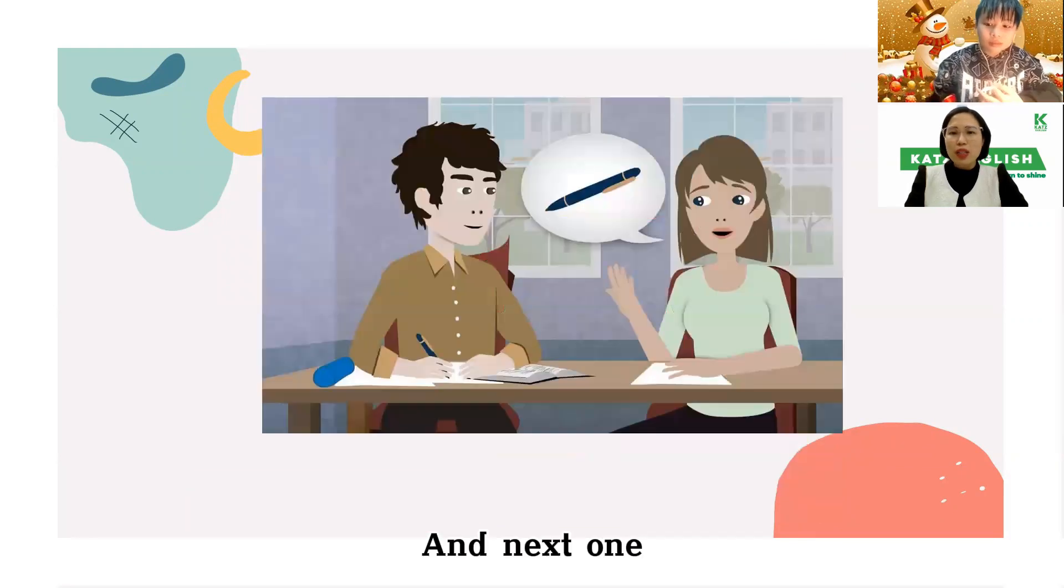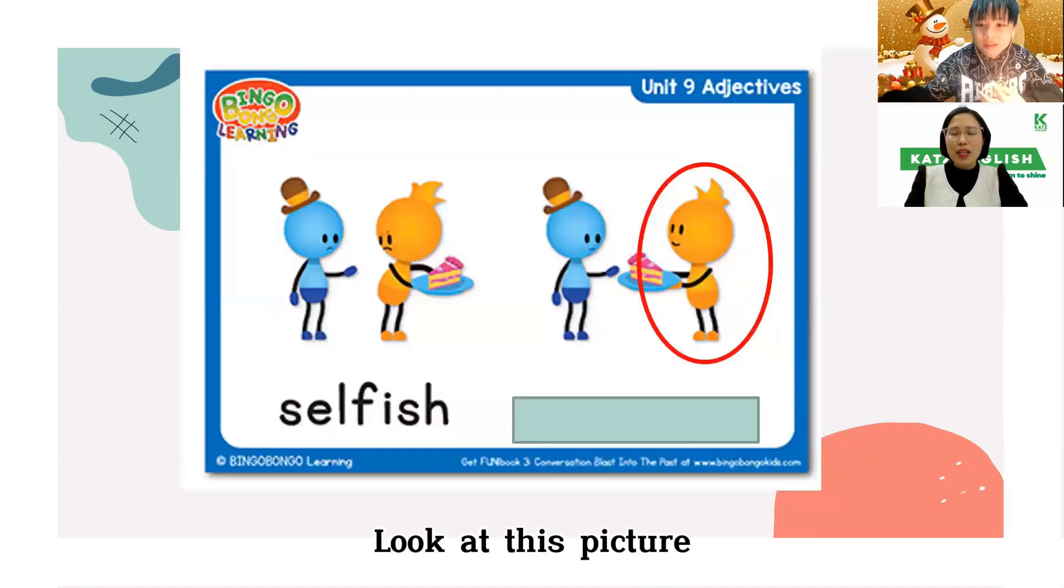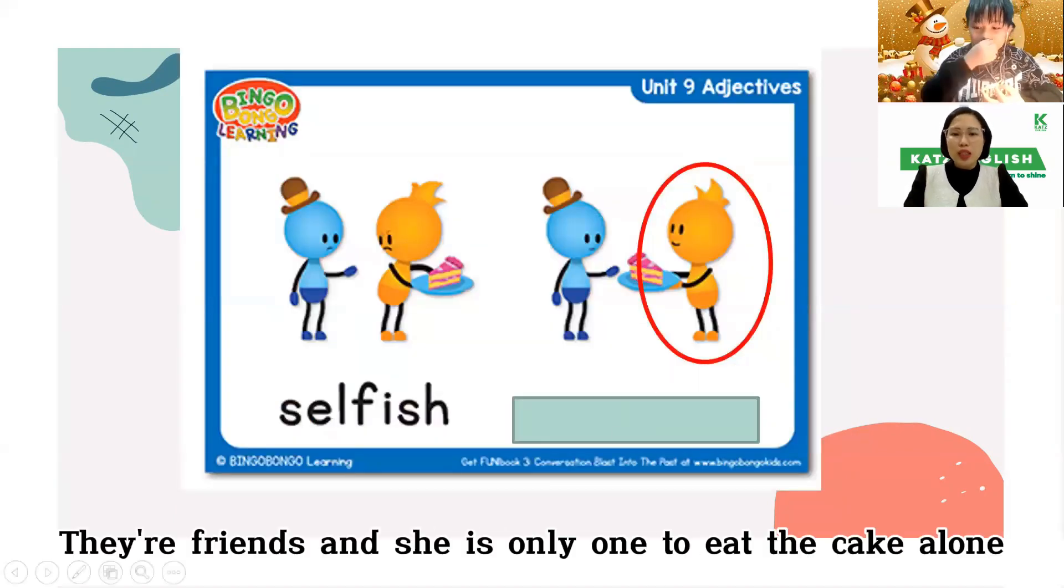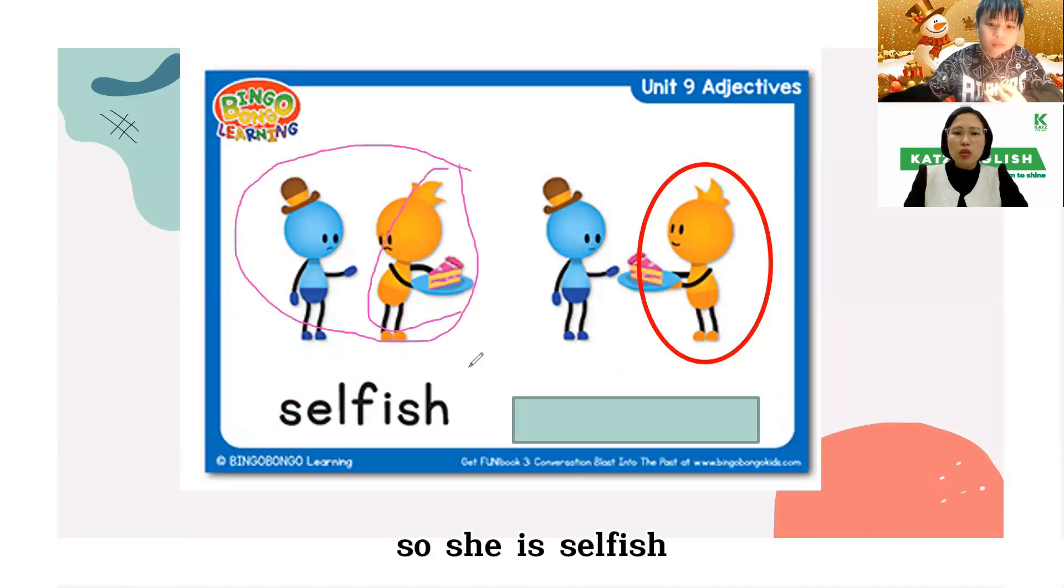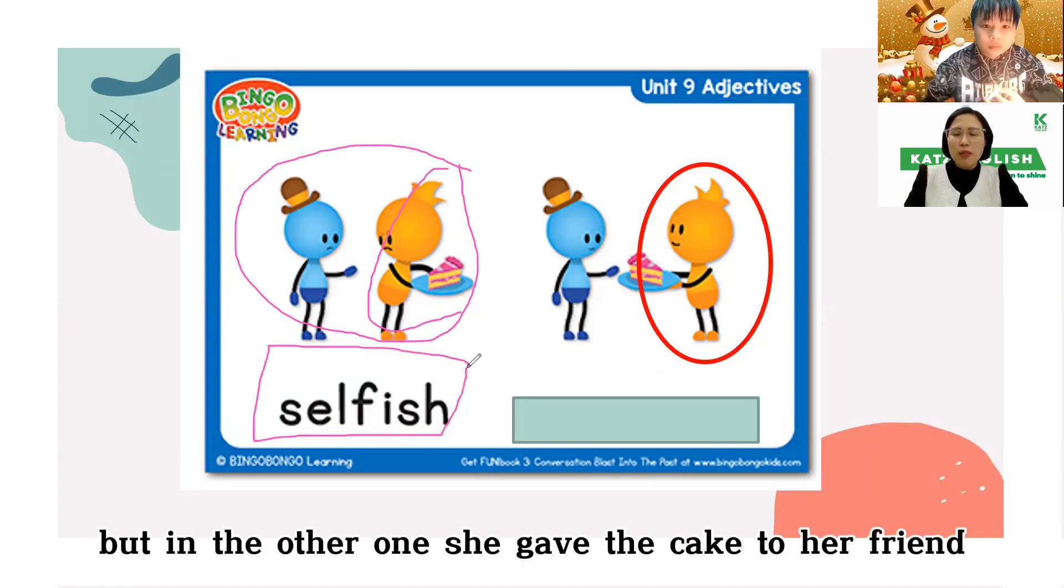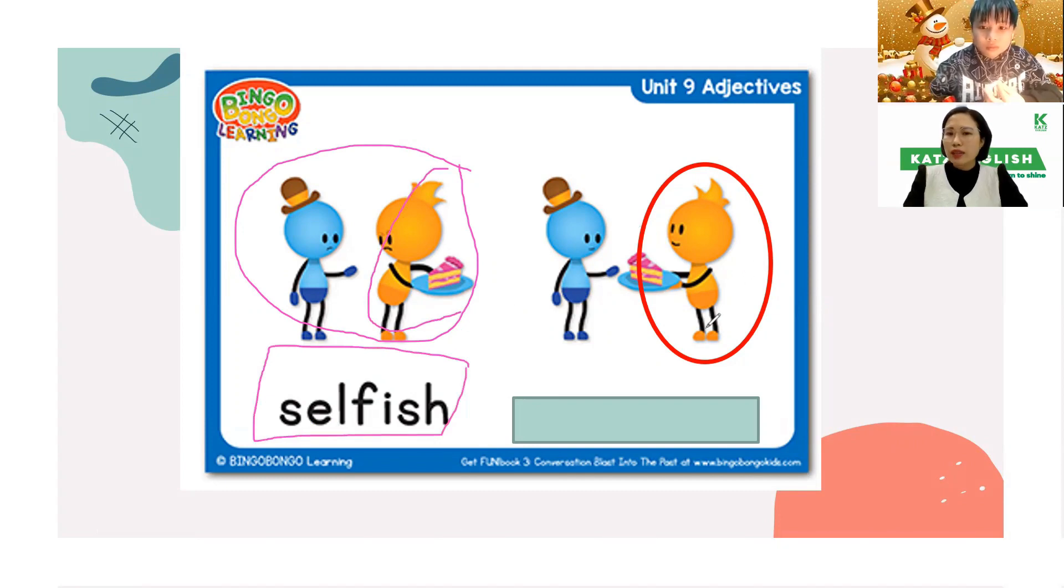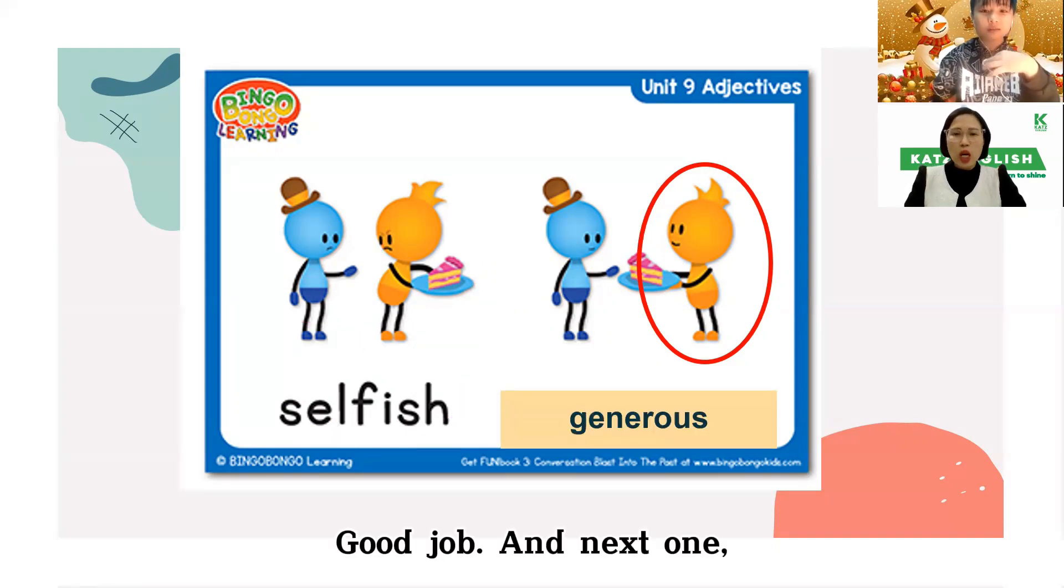And next one, what is she doing? Moral. Okay. Now, look at this picture. They are friends. And she's only one to eat the cake alone. So she is selfish. But in the other one, she gives the cake to her friend. So how is she? Generous. Good job.